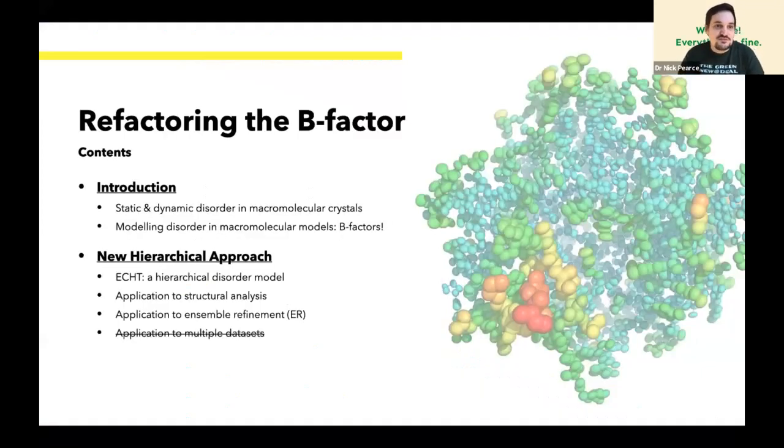So I'm going to start with a brief description of static and dynamic disorder in macromolecular crystals, then move on to everyone's favorite crystallographic parameter B-factors, and then I'll describe a new hierarchical approach called Echt. I'll show it on a couple of structures and also show how we've applied it to ensemble refinement.